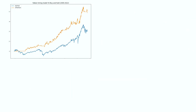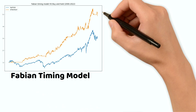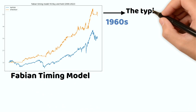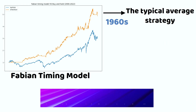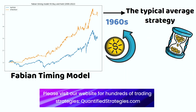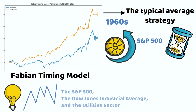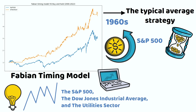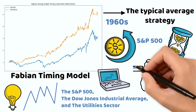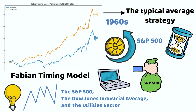The first strategy is the Fabian timing model. Developed in the 1960s, it is not the typical moving average strategy — it uses the power of numbers to time when to buy and sell the S&P 500. Fabian used to track the movements of three indices: the S&P 500, the Dow Jones Industrial Average, and the utilities sector. When these indices move in tandem, the model identifies a buying opportunity.